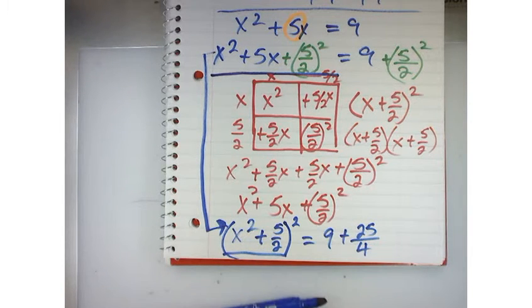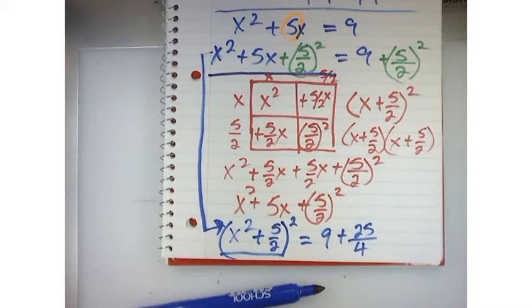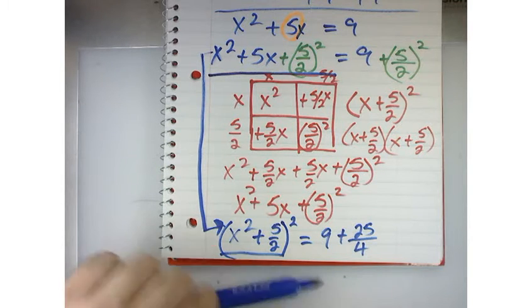So, every time we're going to take that middle number, we're going to divide it by 2 and square it. And what that does is it rigs it up so we can take a perfect square. So, now let's finish this problem. Now that we're running out of space. How do I add 9 to 25 fourths?